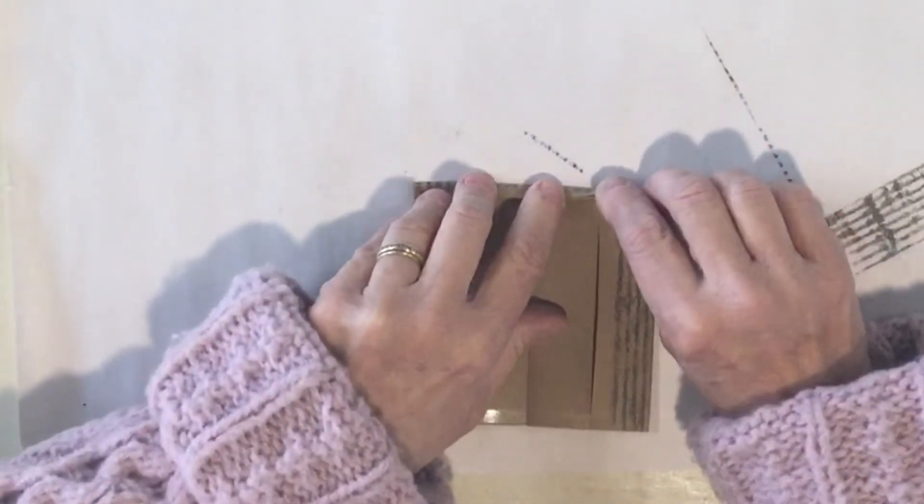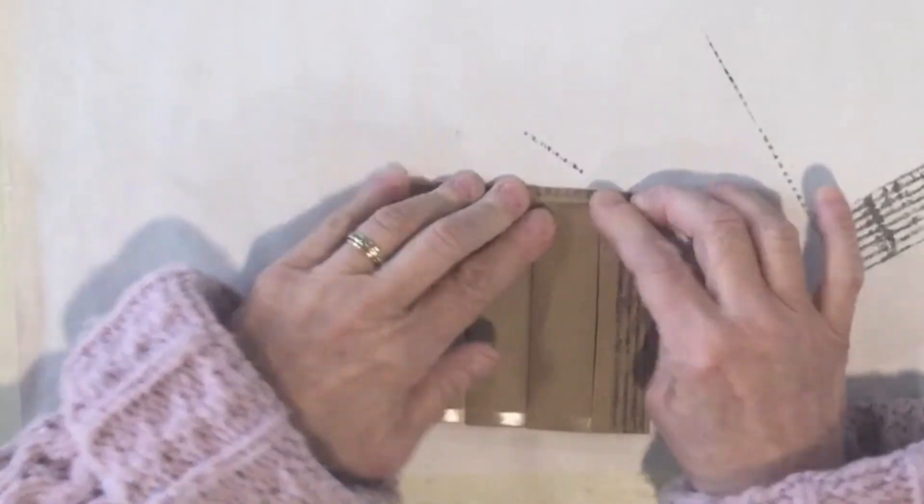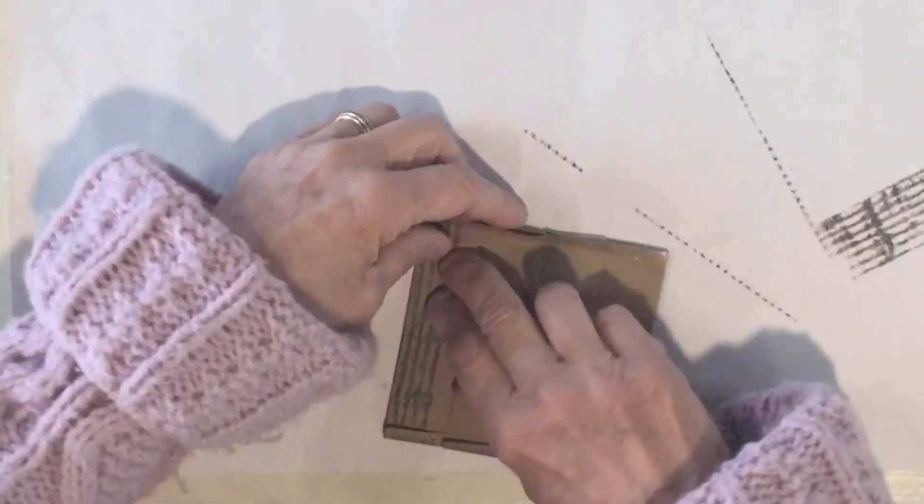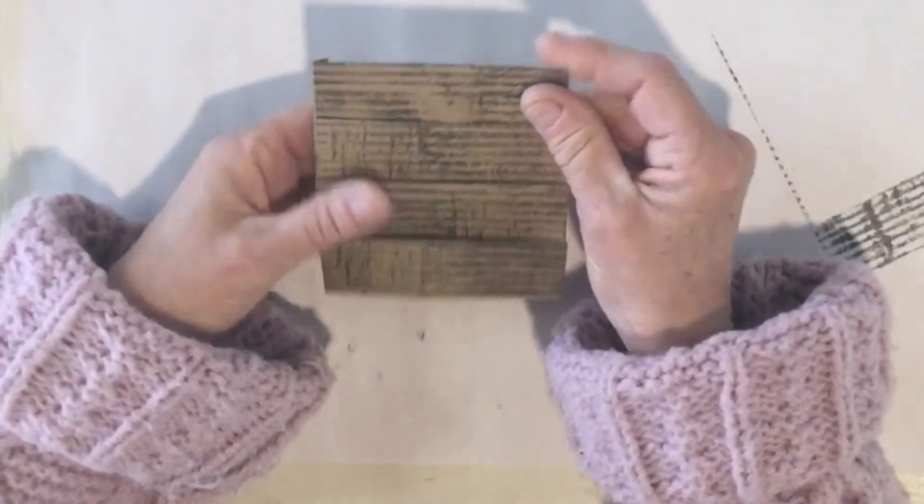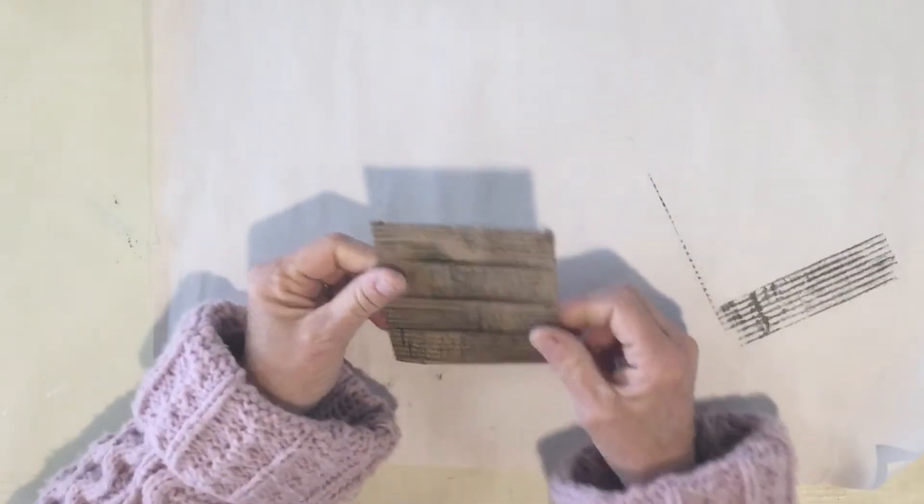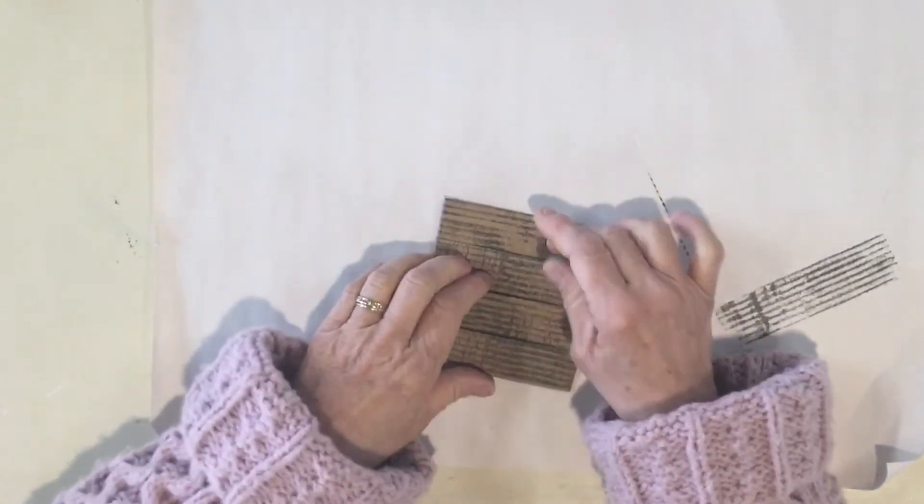At this point now we are going to just where this fold line is that we had scored at that quarter inch, we are going to fold this back. So you would tape this to a card or to a page or in a book.